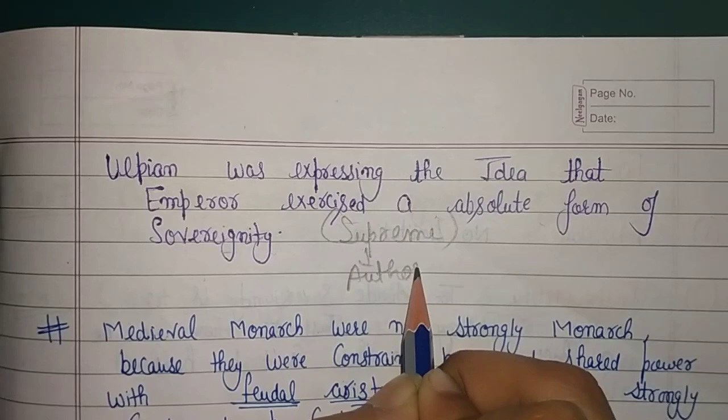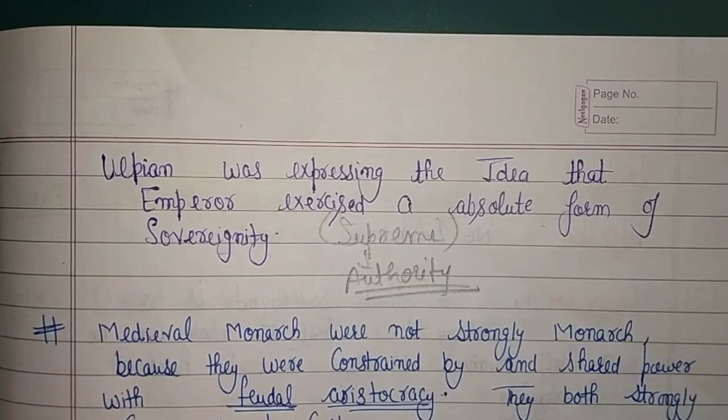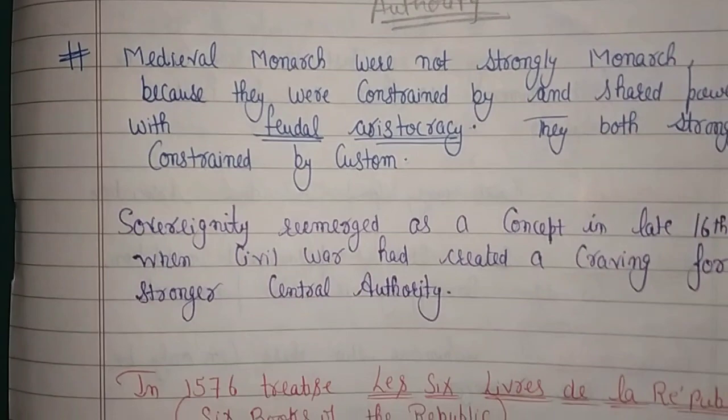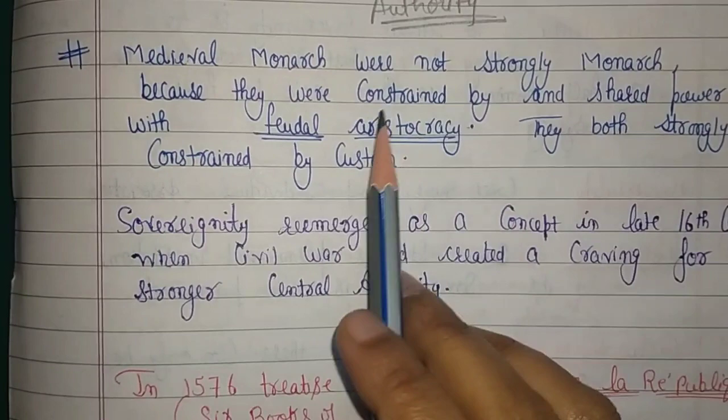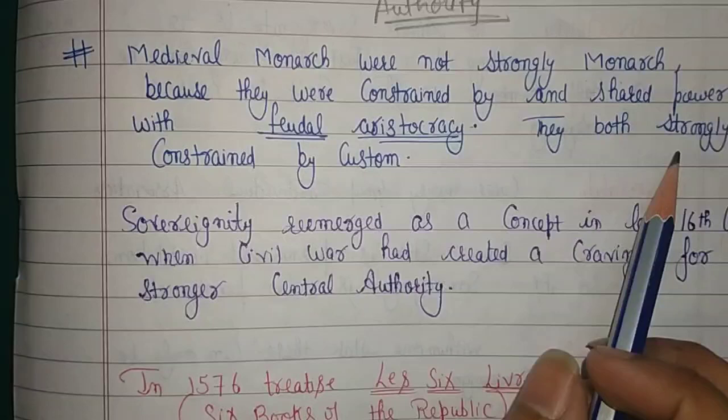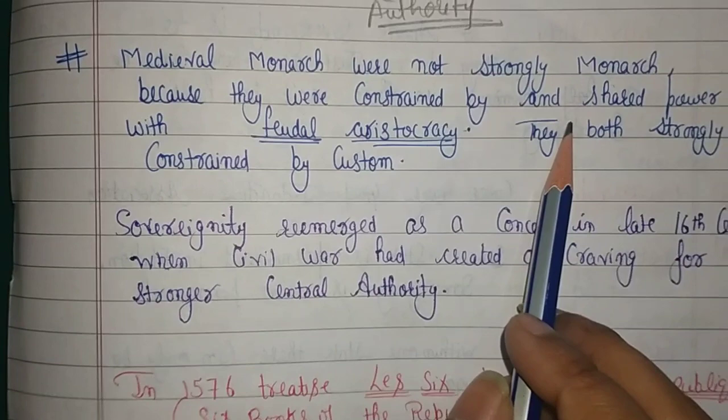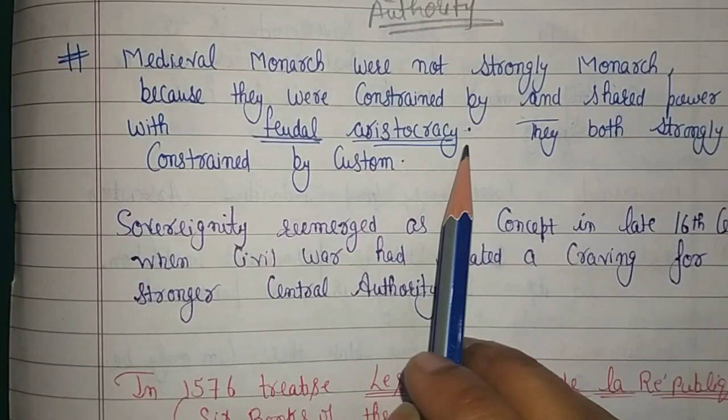राजा पे कोई law apply नहीं हो रही है, और जो ruler है वो बाकियों के लिए law बना रहे हैं। Sovereignty का concept medieval time तक आते-आते — medieval monarchs were not strongly sovereign। Not strongly sovereign body होती थी, क्योंकि यहाँ पर कुछ constraints थे। एक तो power sharing होती थी — monarch, feudal, aristocracy — यह सब power share कर रहे थे।